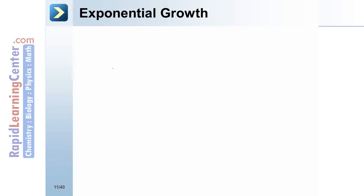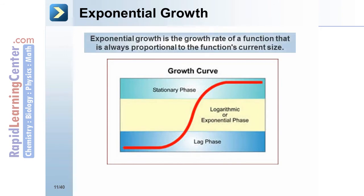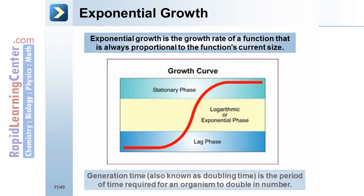Exponential growth is the growth rate of a function that is always proportional to the function's current size. Generation time, also known as doubling time, is the period of time required for an organism to double in number.